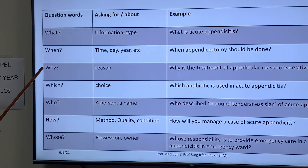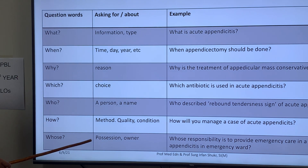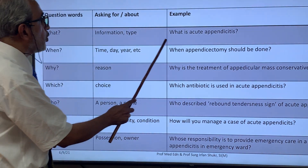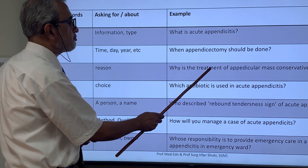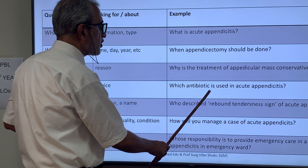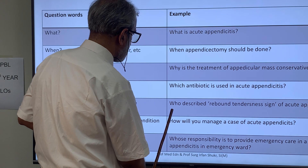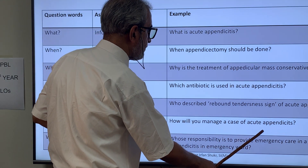The question words are: what, when, why, which, who, how, and whose. When added to sentences they form questions — for example: 'What is acute appendicitis due to?' 'When should appendicitis be operated?' 'Why is treatment of appendicular mass conservative?' 'Which antibiotic is used in acute appendicitis?' 'Who described the rebound tenderness sign?' 'How will you manage a case of acute appendicitis?' 'Whose responsibility is it to provide emergency care?'